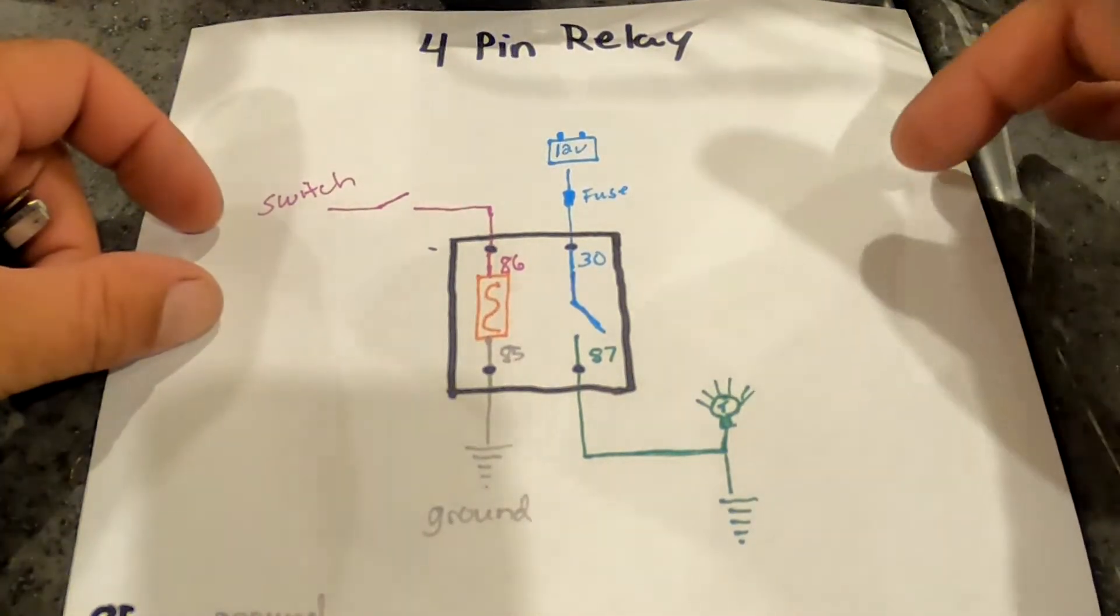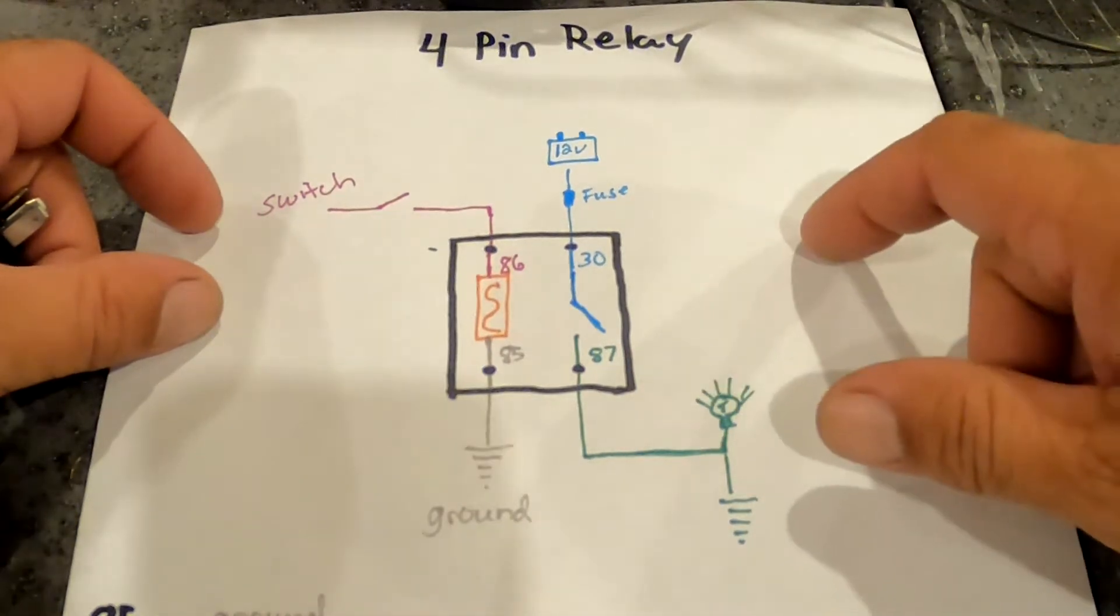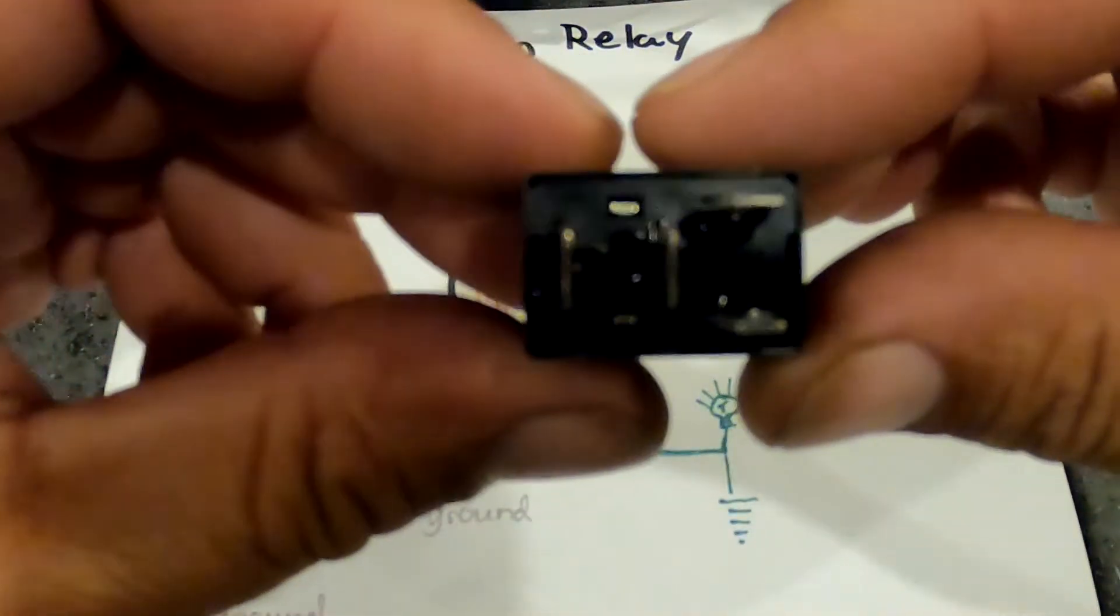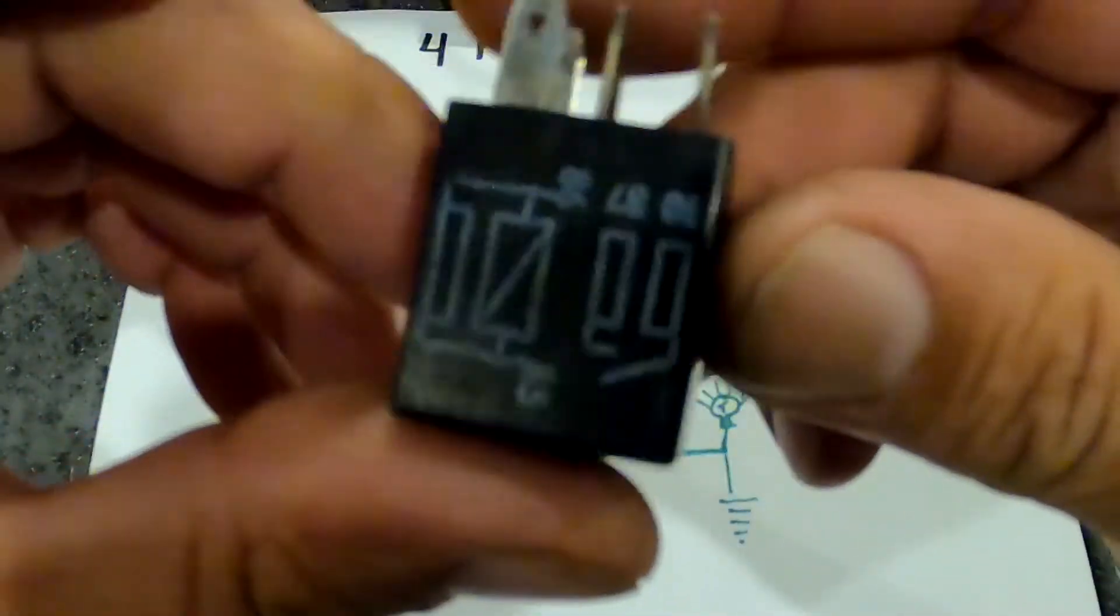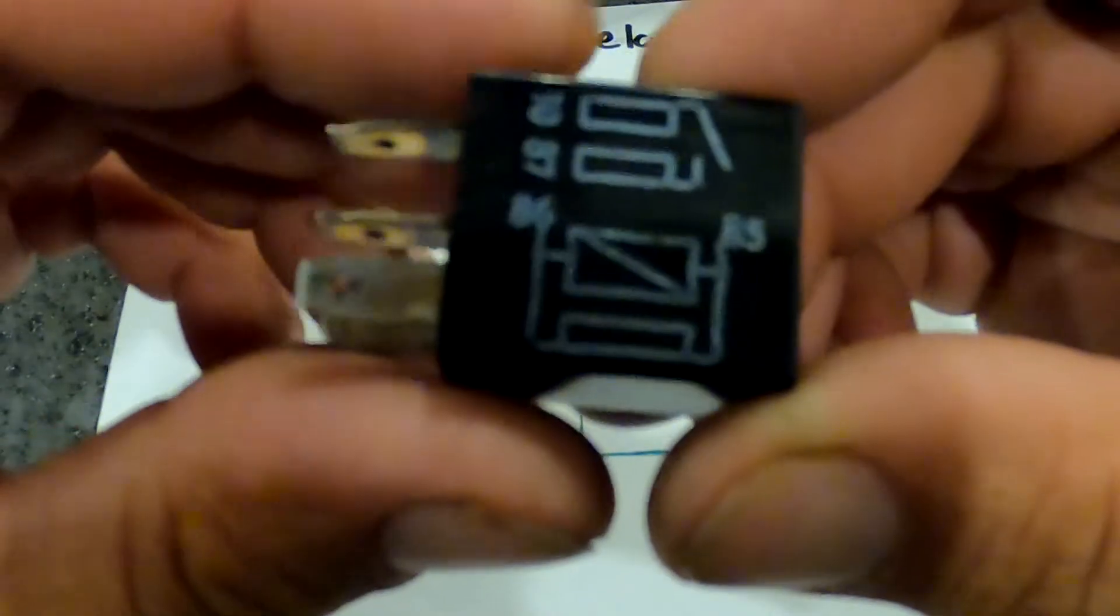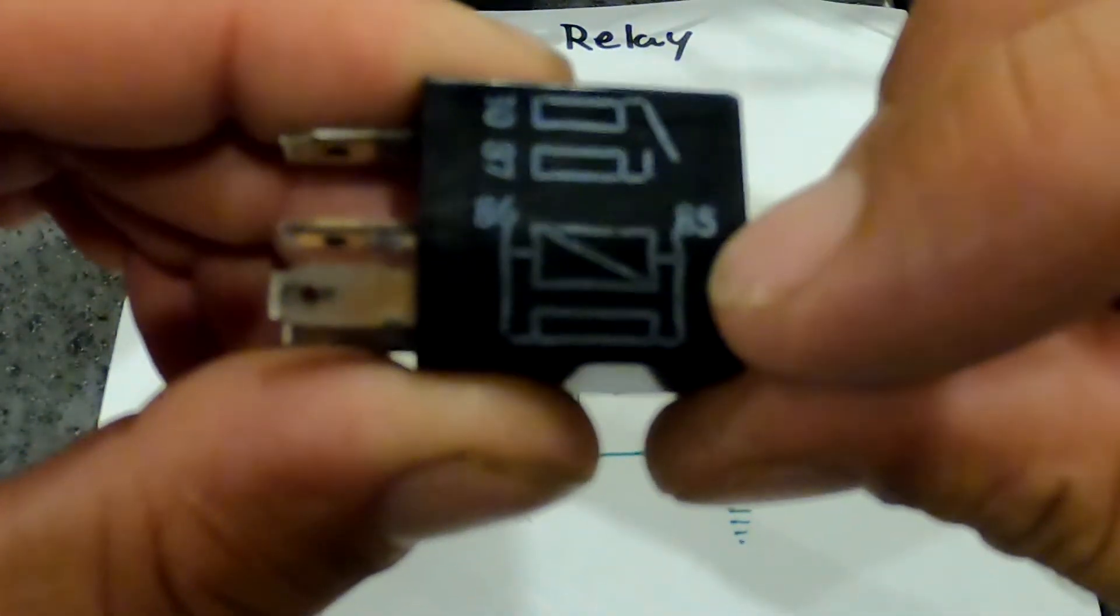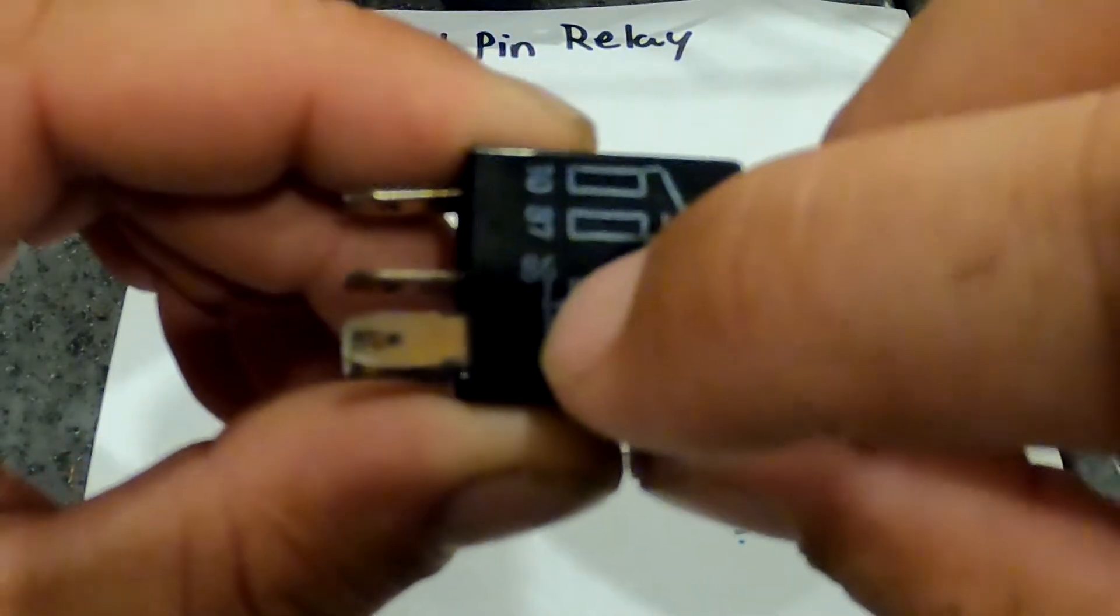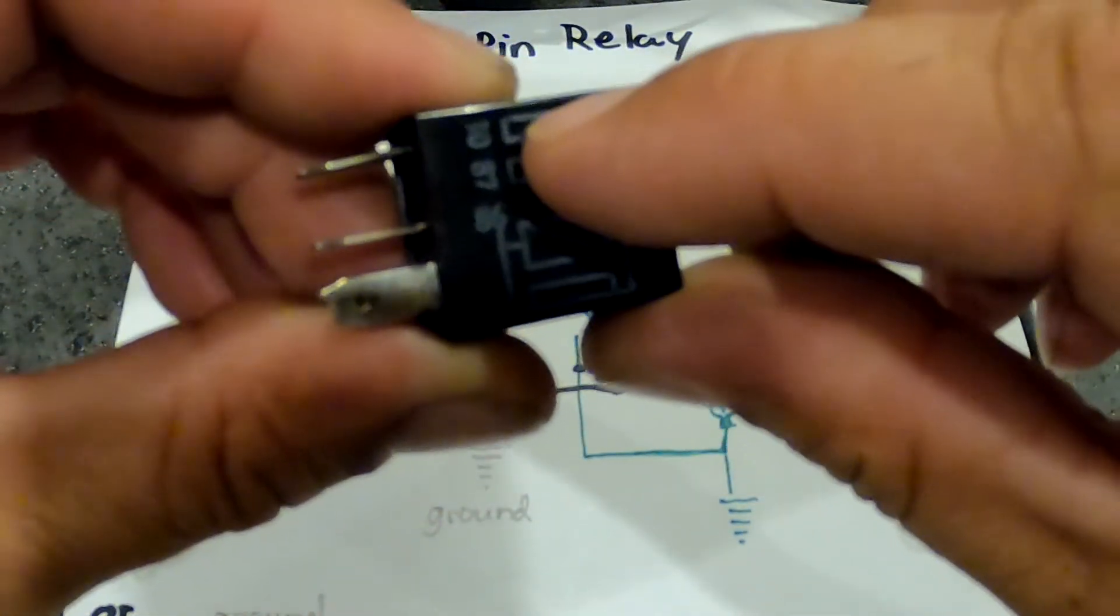This is a four pin relay. They have four pins on it: one's 85, which is your ground; 86, which comes from your switch; 30, which is your 12 volt power supply...